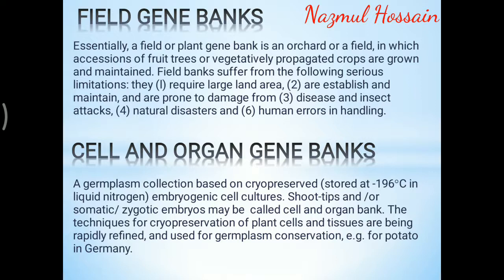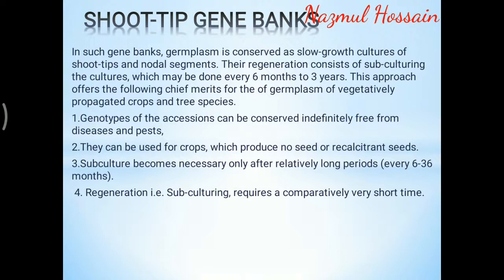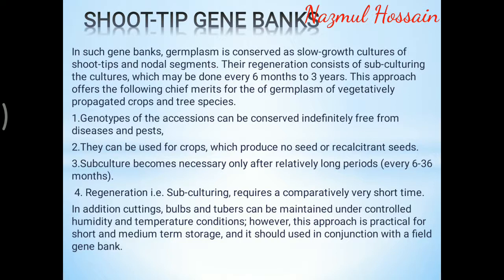The techniques for cryopreservation of plant cells and tissues are being rapidly refined and used for germplasm conservation. Shoot tip gene banks: in such gene banks, germplasm is conserved as slow-growth cultures of shoot tips and nodal segments. Their regeneration consists of subculturing the cultures, which may be done every six months to three years. This approach offers the following chief merits for germplasm of vegetatively propagated crops and tree species: the genotype of the accessions can be conserved indefinitely, free from disease and pests; they can be used for crops which produce no seed or recalcitrant seeds; and subcultures become necessary only after relatively long periods.